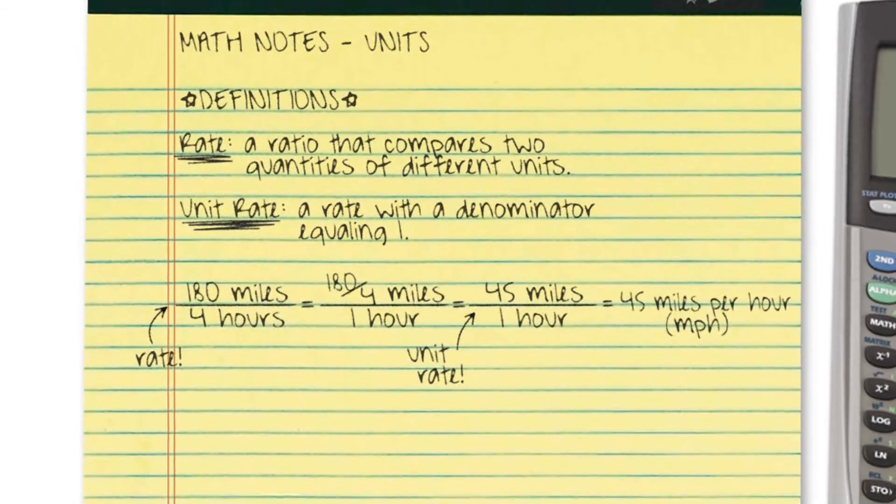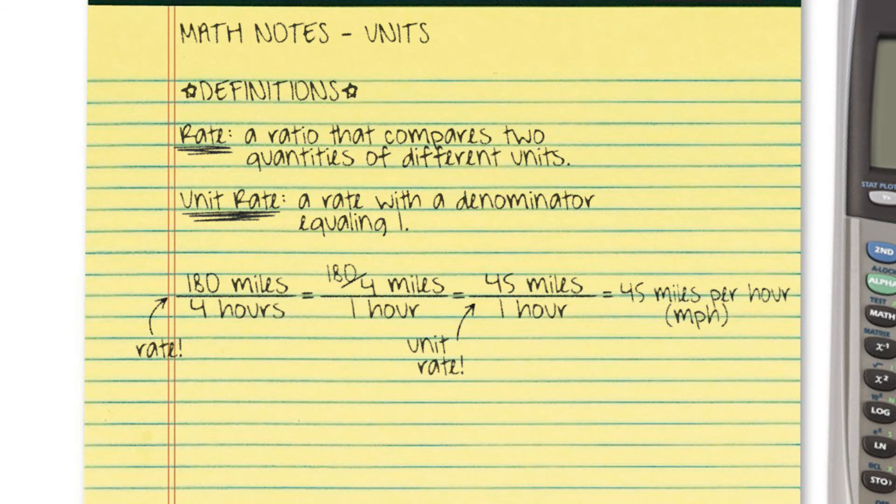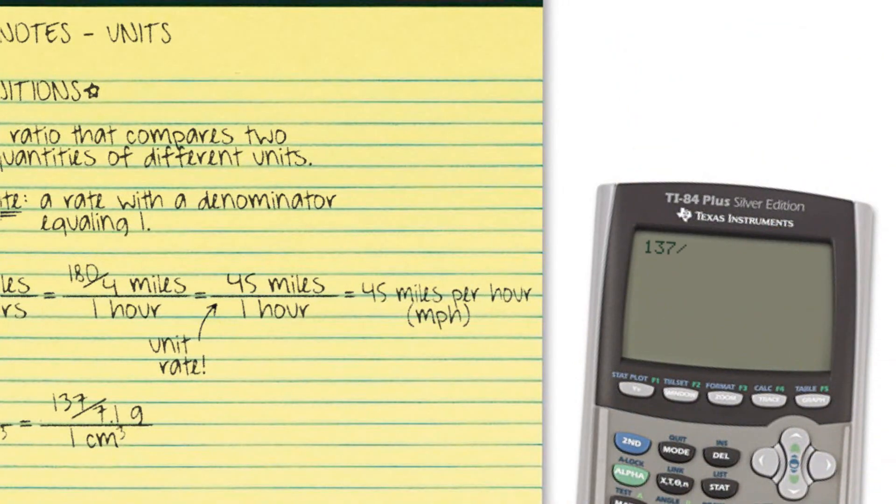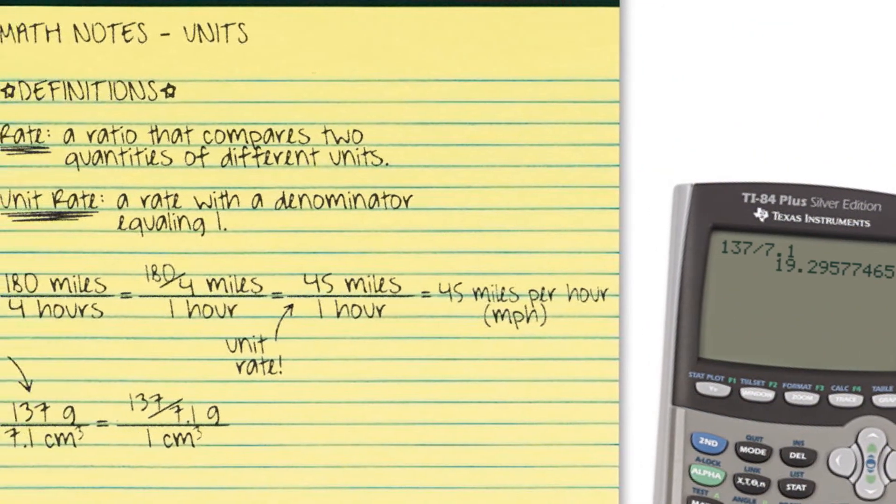In another example, a 137 gram sample of pure gold was found to have a volume of 7.1 cubic centimeters. Rewriting this as a unit rate allows us to express the density of gold to be approximately 19.3 grams per cubic centimeter.